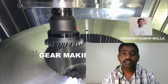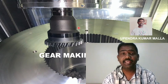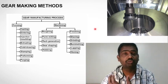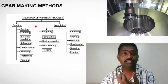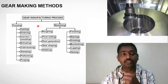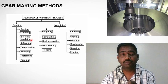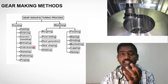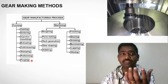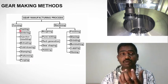Today we will talk about gear making methods. In general, there are two main types: forming and machining. Forming includes casting, sintering, injection molding, extruding, cold drawing, stamping, performing, and forging. Using these forming types, we can form the gear.